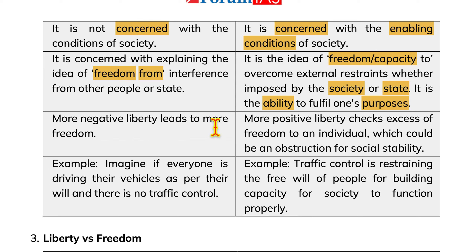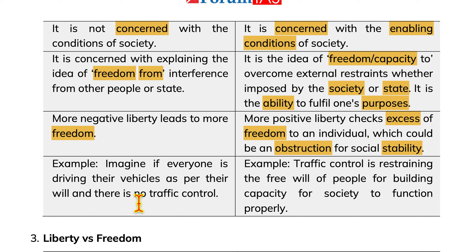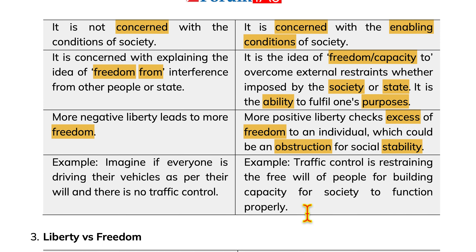More negative liberty leads to more freedom. More positive liberty checks excess of freedom to an individual, which could be an obstruction for social stability. For example, imagine if everyone is driving their vehicle as per their will with no traffic control. An example of positive liberty would be traffic control restraining the free will of people to build capacity for society to function properly.